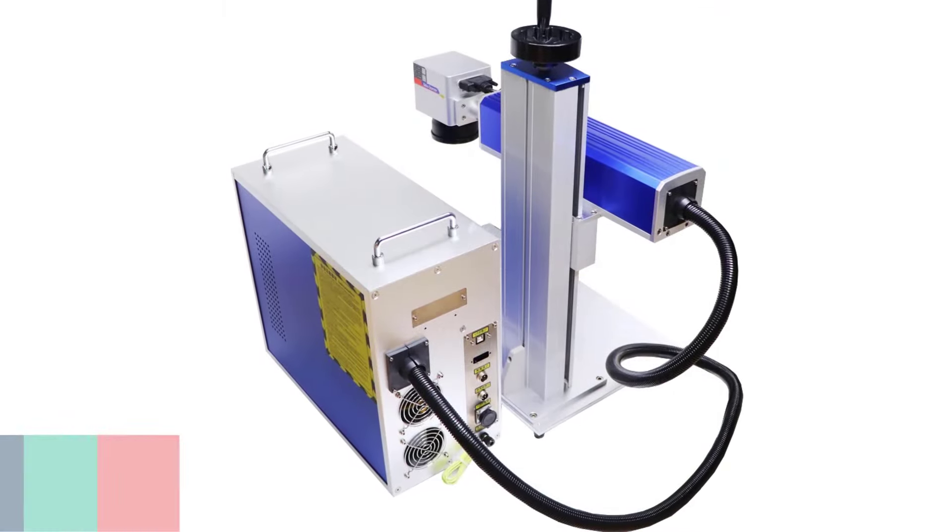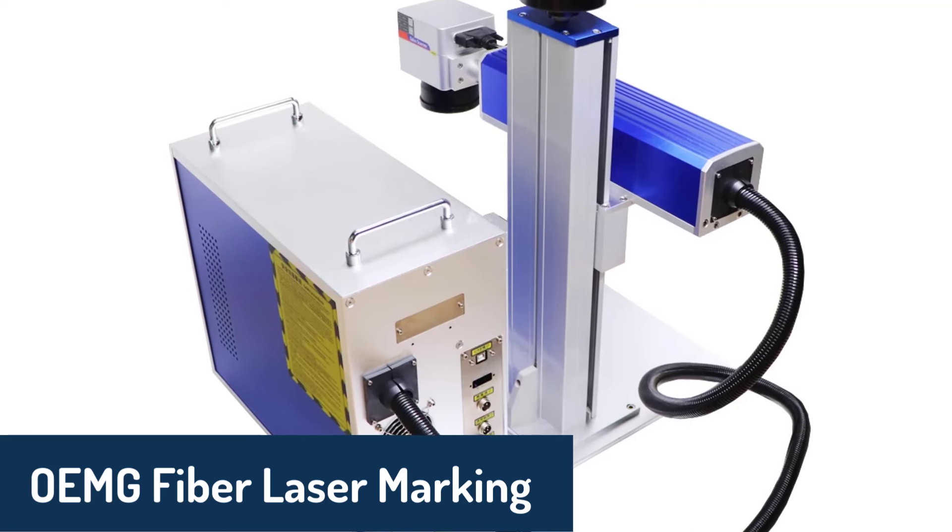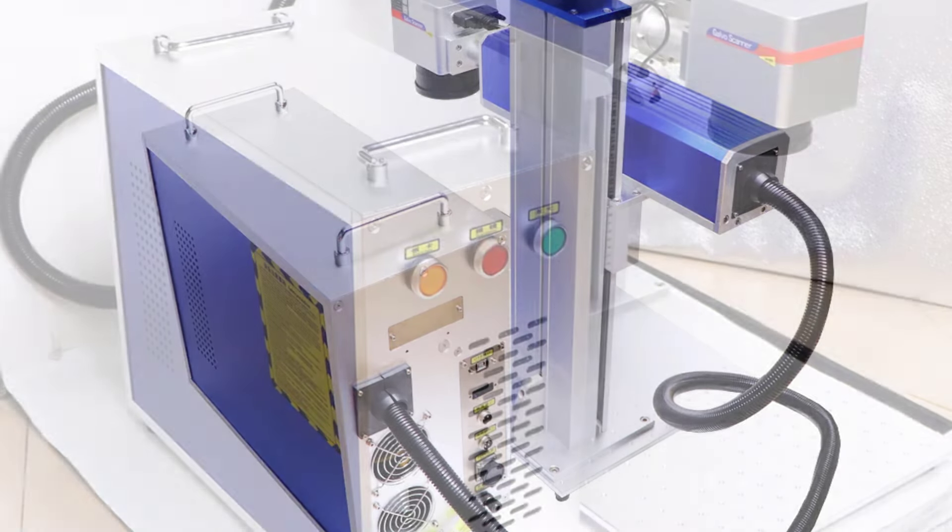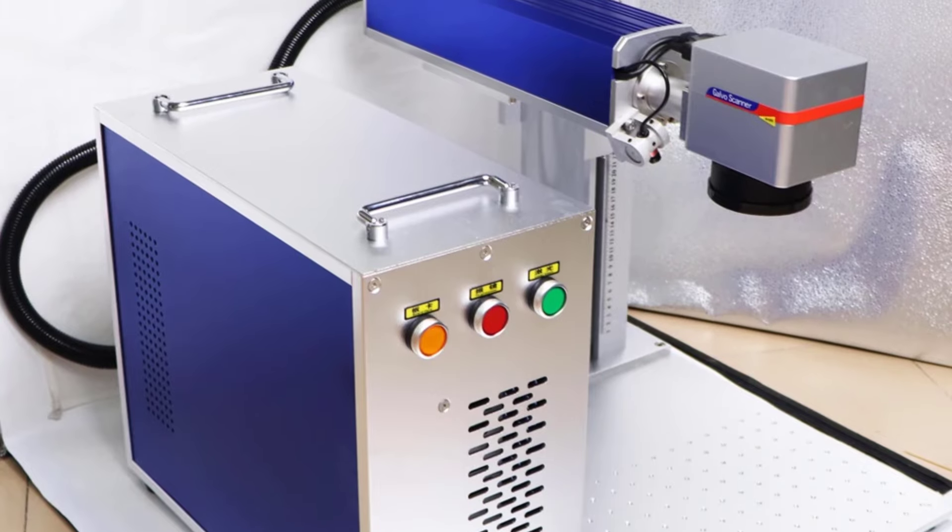Number two is the OEMG fiber laser marking machine. It takes the second spot on our list, offering unparalleled versatility and performance. With laser power options ranging from 20W to 100W and customizable working areas, this machine is designed for flexibility.